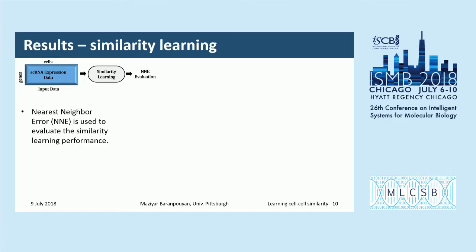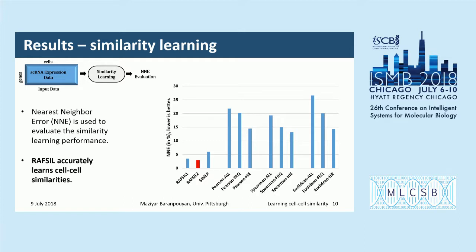For similarity learning, we learn the similarity matrix from RAFSIL and evaluate performance using nearest neighbor error — the fraction of misclassified cells when a simple KNN classifier is used with true cell labels. This plot shows the results, with NNE on the y-axis (lower is better). We compare RAFSIL-1 and RAFSIL-2 with domain-specific methods like SIMLR and generic methods like Pearson correlation, Spearman, and Euclidean distance, under different gene filtering approaches such as highly expressed or highly frequent genes. RAFSIL accurately learns cell-to-cell similarity.